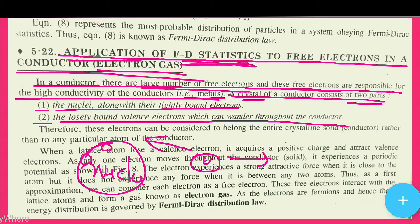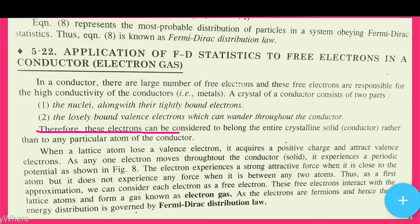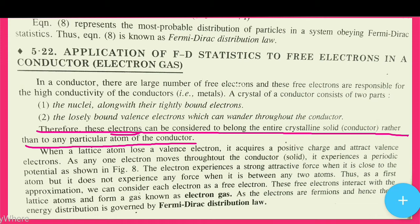Therefore, these electrons can be considered to belong to the entire crystalline solid conductor rather than to any particular atom of the conductor. This is the valence electron which belongs to the entire conductor.